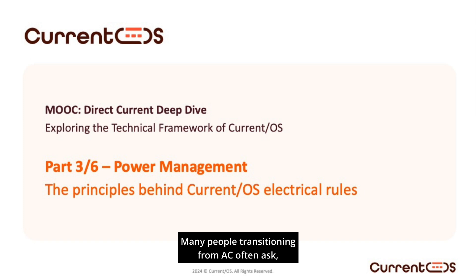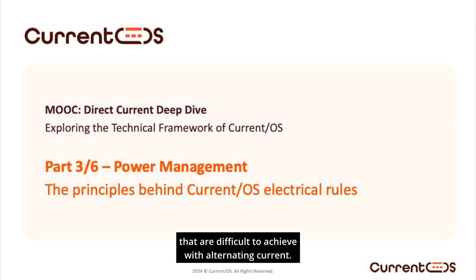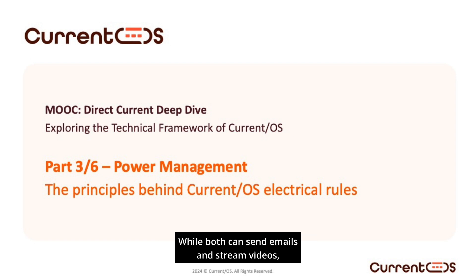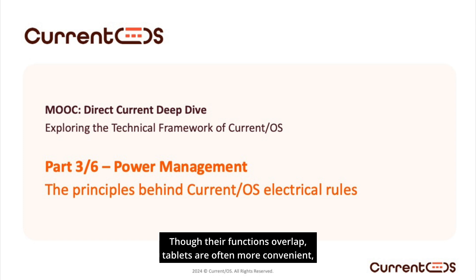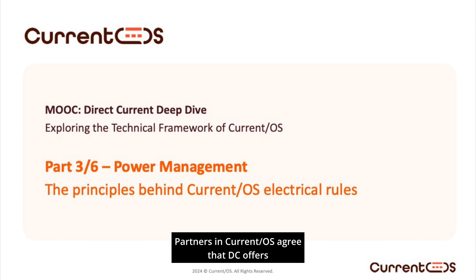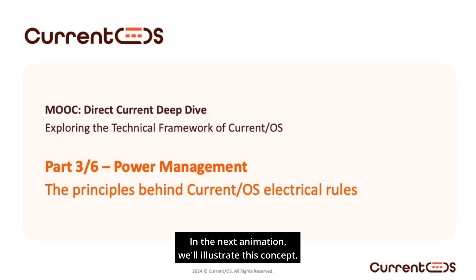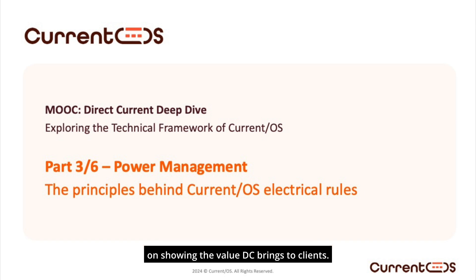Many people transitioning from AC often ask: what does DC bring to the table? A helpful analogy is the difference between a tablet and a laptop. While both can send emails and stream videos, they serve distinct purposes. In practice, we might use a laptop for work and a tablet at home to watch Netflix. Though their functions overlap, tablets are often more convenient, fluid, and better suited to specific situations. The same principle applies to AC and DC. Partners in Current OS agree that DC offers more refined, sophisticated power flow management capabilities, enabling new services and possibilities that AC systems cannot provide as effectively.